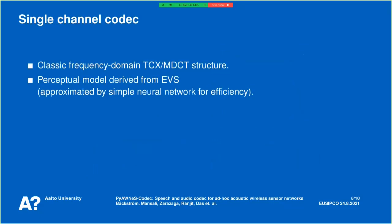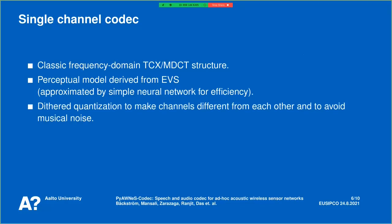The single-channel codec part is a classic TCX type based on MDCT. Most of it is derived from an EVS-type structure, and the Bluetooth structure is understood to be similar as well. Only the perceptual model is approximated from the EVS using a neural network, because EVS has a time-domain perceptual model which brings extra complexity we don't want. The biggest difference for multi-channel operation is that all quantization is dithered.